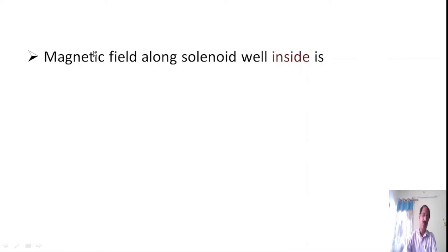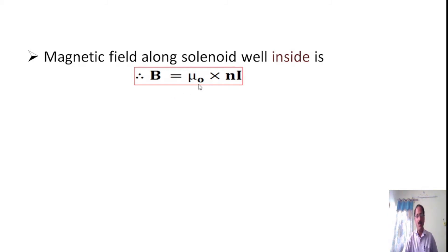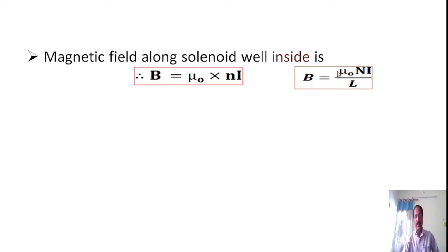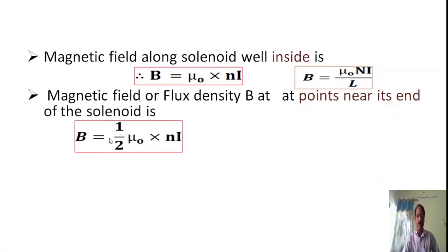Now we can recall the expressions derived for the solenoid and toroid. The magnetic field well inside the solenoid is given by B = mu_0 n i, where n is the number of turns per unit length, calculated by dividing the total number of turns by the length of the solenoid. The magnetic field at a point near the end of the solenoid is half that value: B = (1/2) mu_0 n i, where mu_0 is the permeability of free space.